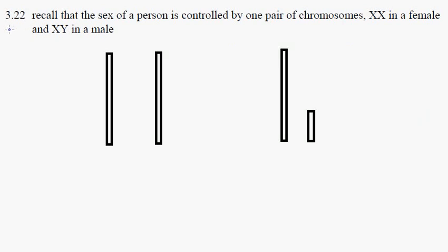IGCSE Biology, Syllabus Statement 3.22. Here we're recalling that the sex of a person is controlled by one pair of chromosomes.